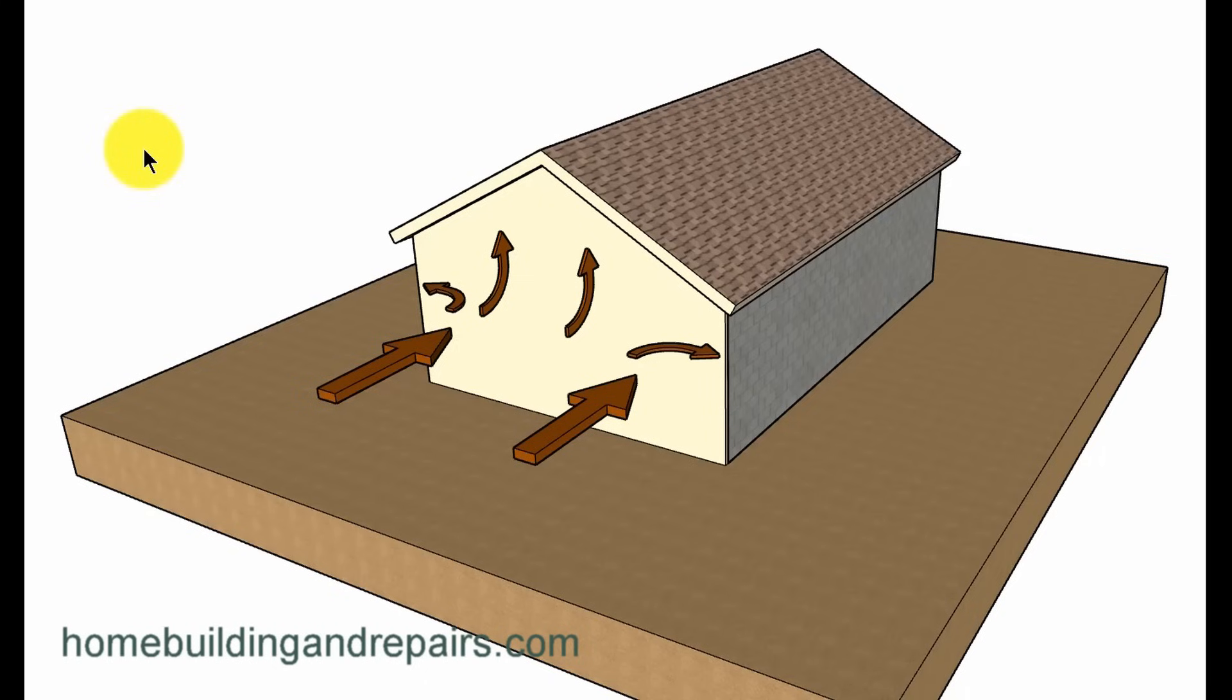In this video I'm going to attempt to explain how a roof design with an overhang can create problems in high winds, tornadoes, and hurricanes.